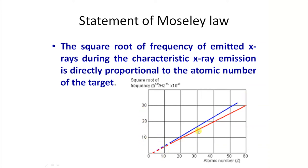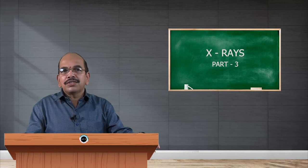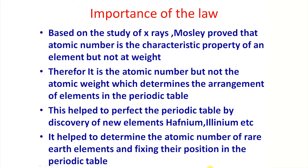There is a linear relationship between the square root of frequency and atomic number. Based on this dependency of atomic number for the position of the K alpha line, Moseley studied the positions of different elements in the periodic table. His law proved that atomic number is the characteristic property of an element, but not the atomic weight. Therefore, it is the atomic number, not the atomic weight, which determines the arrangement of elements in the periodic table.